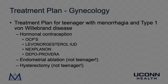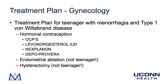Moving on to treatment — we need to think about what the gynecologist will do and what the hematologist will do. For teenagers, the gynecologic focus is on hormonal contraception. These patients can take most forms, including combination oral contraceptive pills with estrogen and progestin, progestin-only contraceptive pills, levonorgestrel IUDs, the Nexplanon implant, and Depo-Provera. The latter three options are more likely to provide amenorrhea and therefore help the patient have little to no menstrual bleeding.